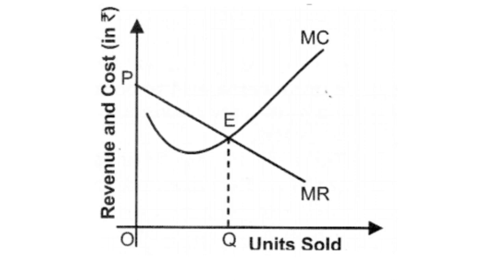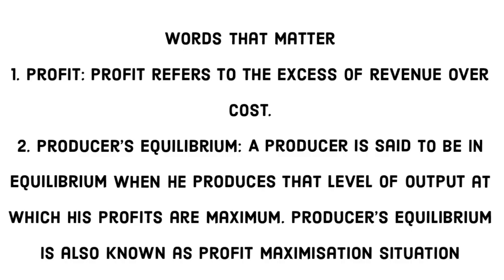So the producer is at equilibrium at OQ units. Now to recap the key words: profit equals revenue minus cost, and if the value is positive, it is profit. Producer equilibrium is the situation where profit is maximized.